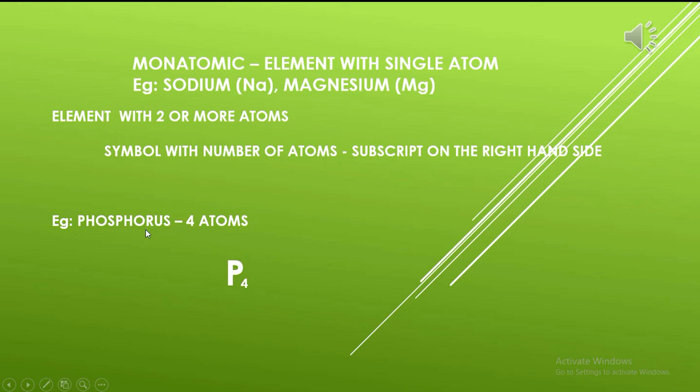For example, the molecule of phosphorus has four atoms. Hence, its molecular formula is P subscript 4 (P₄).